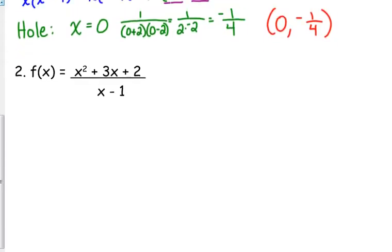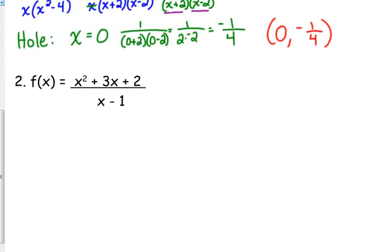x squared plus 3x plus 2 over x minus 1. Do we have a horizontal asymptote? No, because the degree of the numerator is greater than the degree of the denominator. So none, you can put not applicable, whatever you want to do. Don't put zero, because zero is a horizontal asymptote.